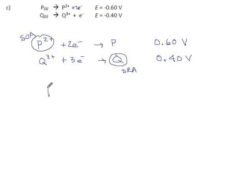This top reaction would stay as is. So the higher reaction stays as it was originally written, and the lower reaction, the reduction always gets flipped. Q to Q3+ plus three electrons, and because we flip this, negative 0.40 volts.